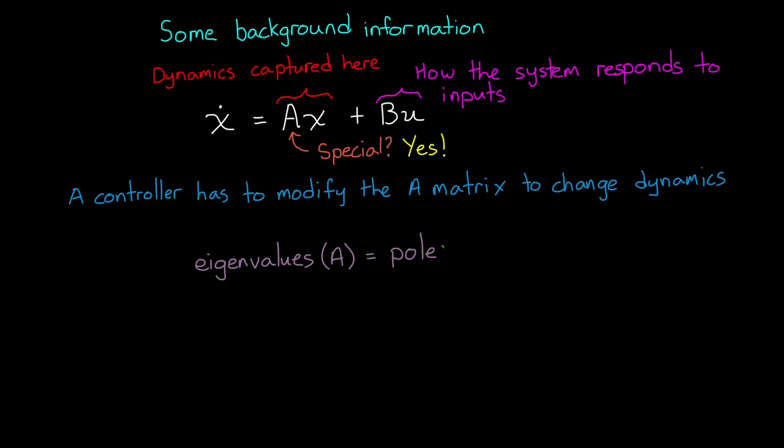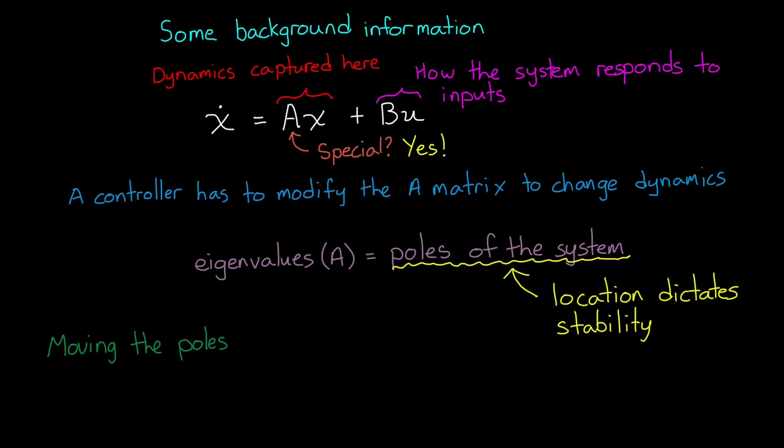The eigenvalues of the A matrix are the poles of the system. And the location of the poles dictate stability of a linear system. And that's the key to pole placement. Generate the required closed loop stability by moving the poles or the eigenvalues of the closed loop A matrix. Now I want to expand a bit more on the relationship between poles and eigenvalues and stability before we go any further. Because I think it will help you understand exactly how pole placement works.